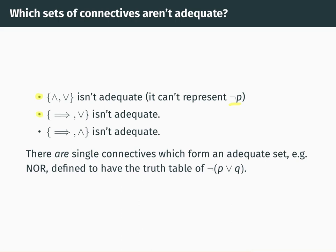By a similar argument, you can show that {implies, OR} is not adequate and {implies, AND} is not adequate. And of course, if {NOT, OR} is not adequate then certainly just NOT on its own is not adequate, and just OR on its own is not adequate. Similarly, if {implies, OR} is not adequate then implies on its own is not adequate. So you might ask: is there some other single connective which on its own is actually adequate — some single connective such that any well-formed formula is logically equivalent to one just using that connective?